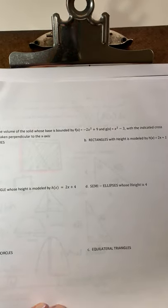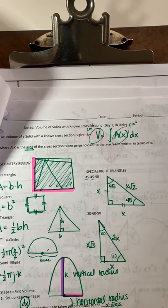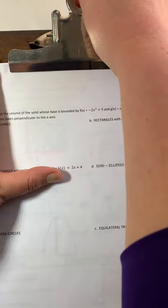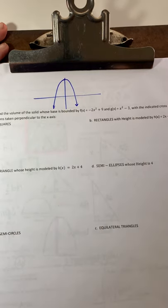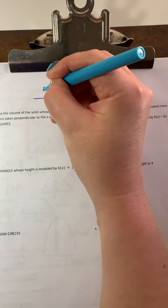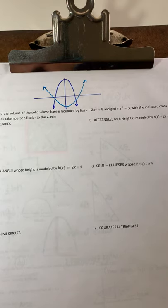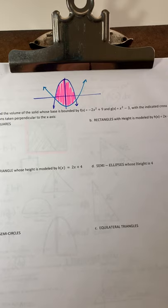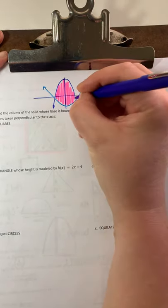We're going to finish up the last page of the notes that we started yesterday — volume of known cross-sections, day one. First, let's set up our region. We have negative 2x squared plus 9, which is a parabola opening down, and x squared minus 3, which opens up. You can see the region bounded between those curves. The next step is to find the intersection points and define the distance across the base.